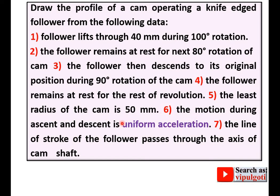So very important part. The line of stroke of the follower passes through the axis of the cam shaft. That means offset distance is 0. So there is no need to draw the offset circle as well as the tangent lines.